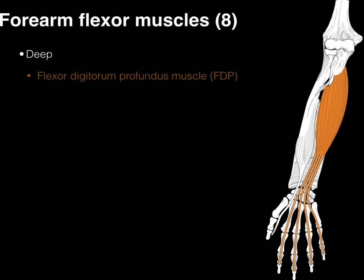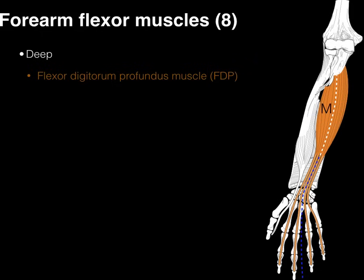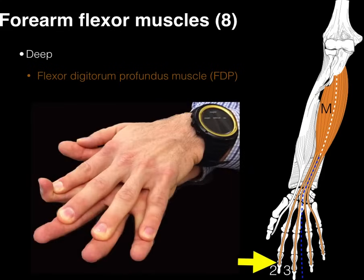Next is the flexor digitorum profundus, FDP — one to note because it's different. It arises from the ulna, courses down, traverses the carpal tunnel, and inserts on the distal phalanges of digits 2 through 5. What makes it unique is its dual innervation: the radial half, acting on digits 2 and 3, is innervated by the median nerve, while the ulnar half, acting on digits 4 and 5, is innervated by the ulnar nerve. Bending the DIP of digits 2 and 3 tests the median nerve portion of the FDP.